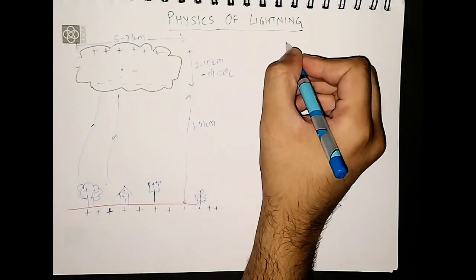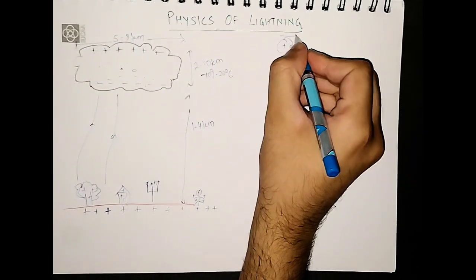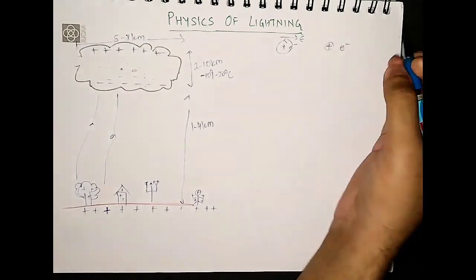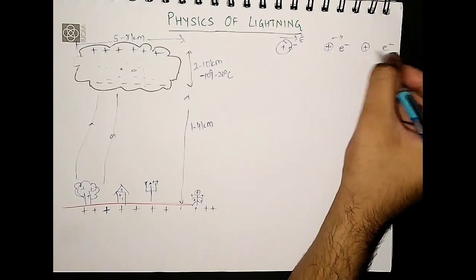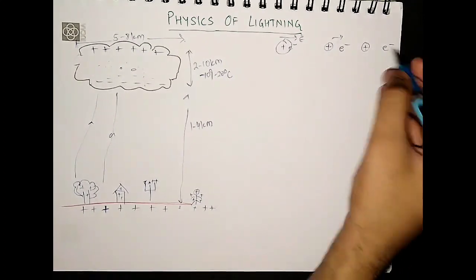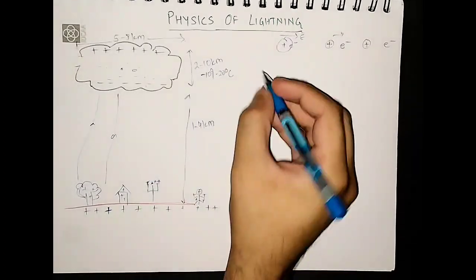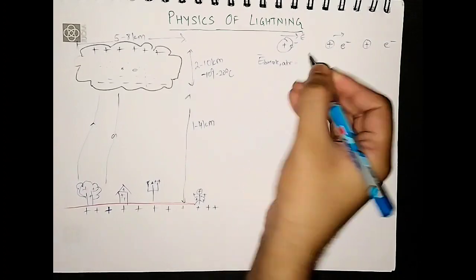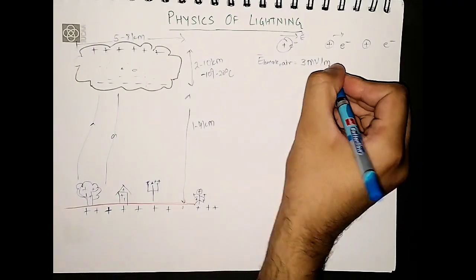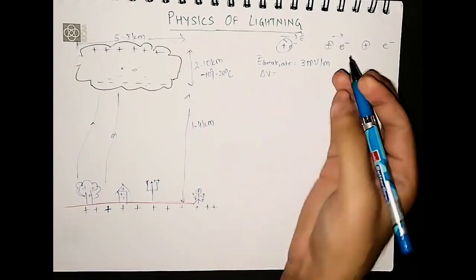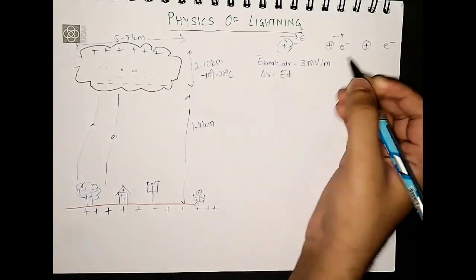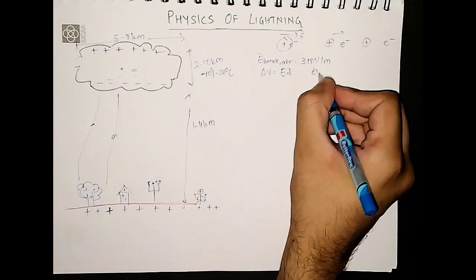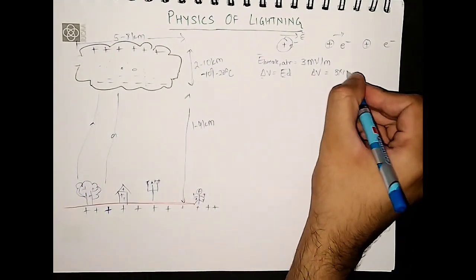Electric breakdown is basically when you have an atom and you apply an electric field — the charges get separated, and if the field is strong enough, the electron becomes free. This is what we call ionization or the plasma state, which is perfectly conducting. The electric breakdown value of air is around 3 MV per meter. If we consider a uniform field and the distance is about 1 kilometer, then delta V would be around 3 into 10 to the 9 volts — that is the potential difference between the cloud and the ground.